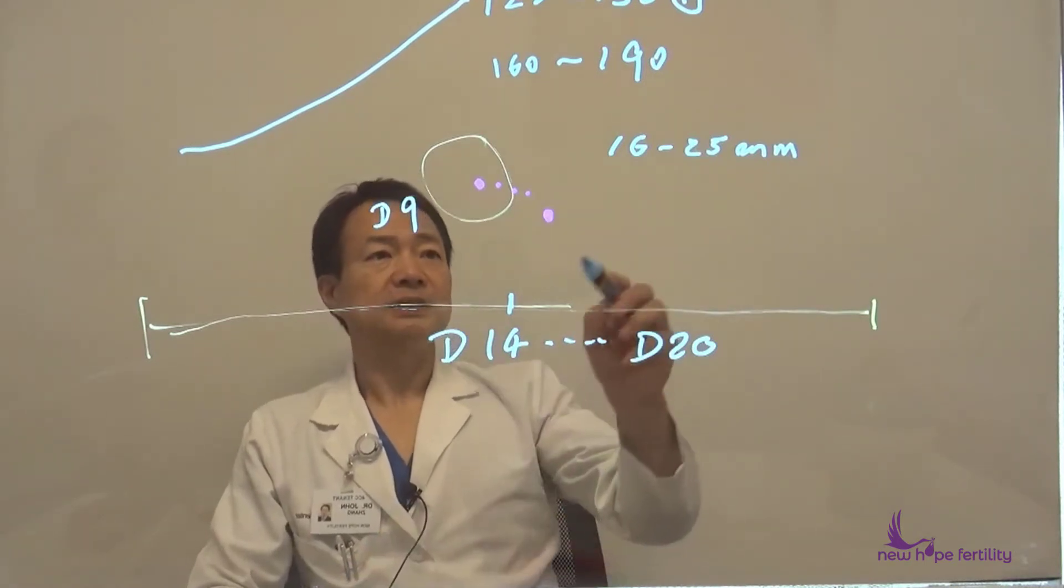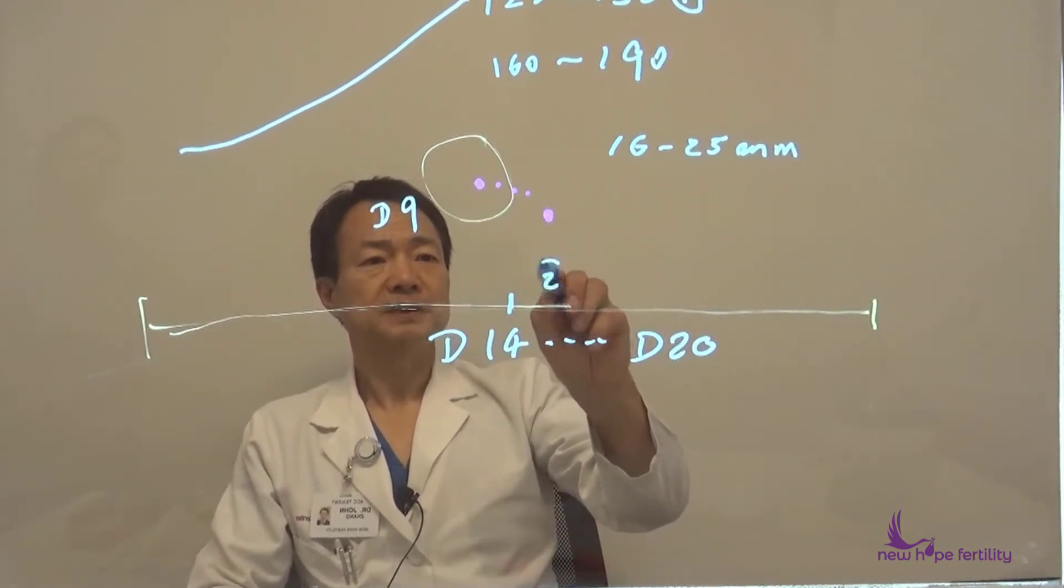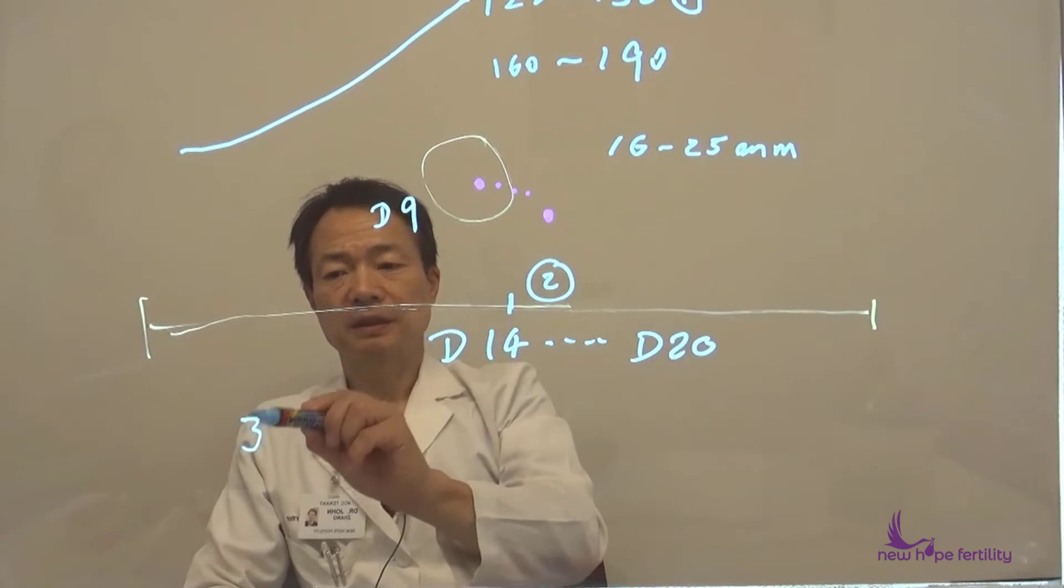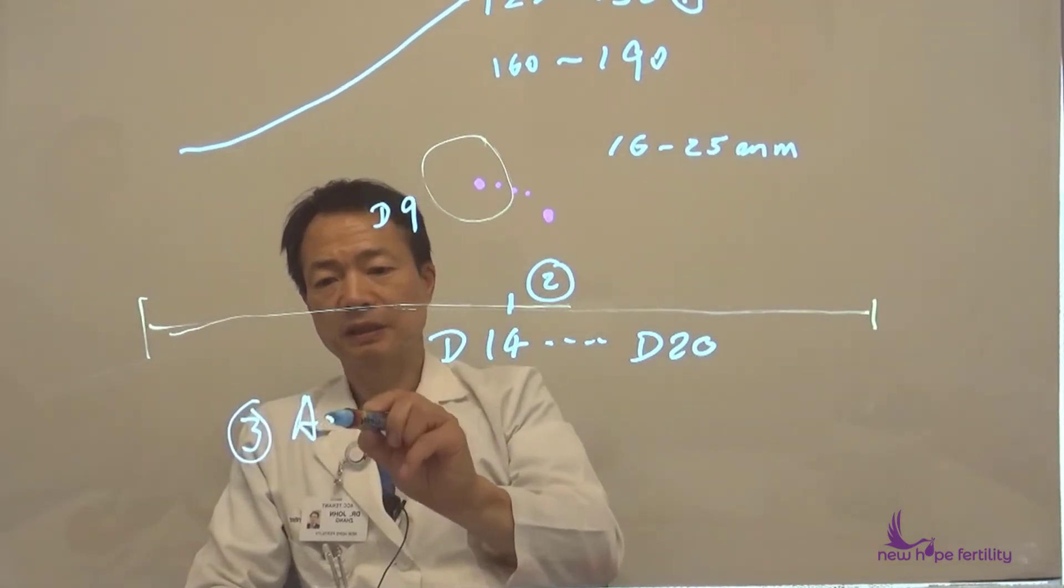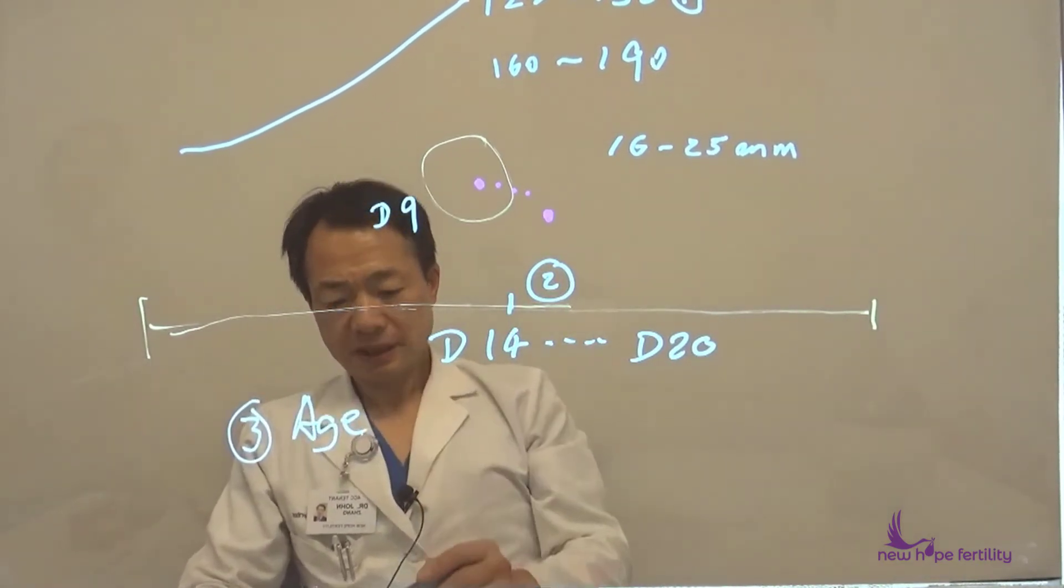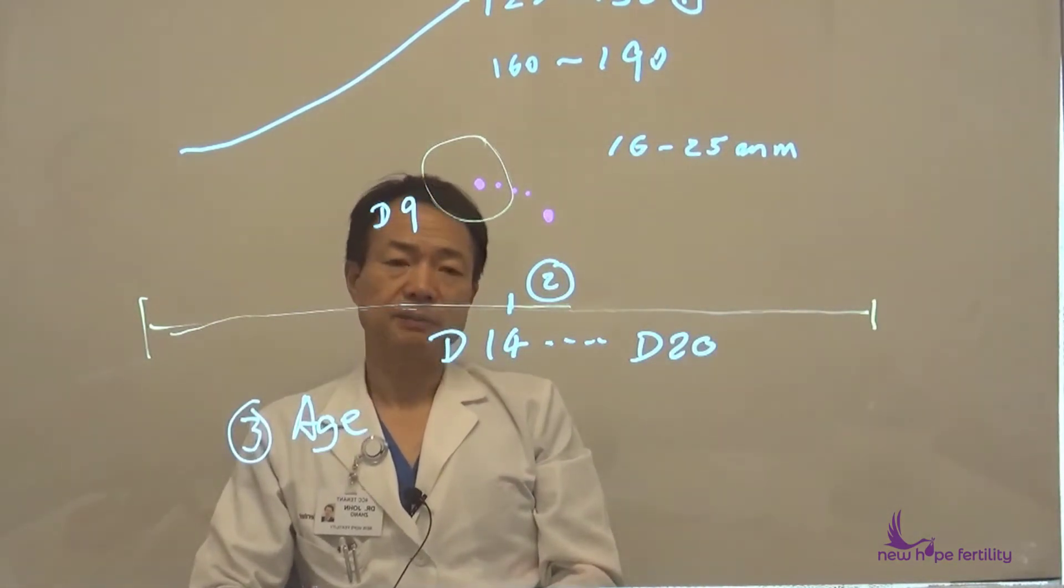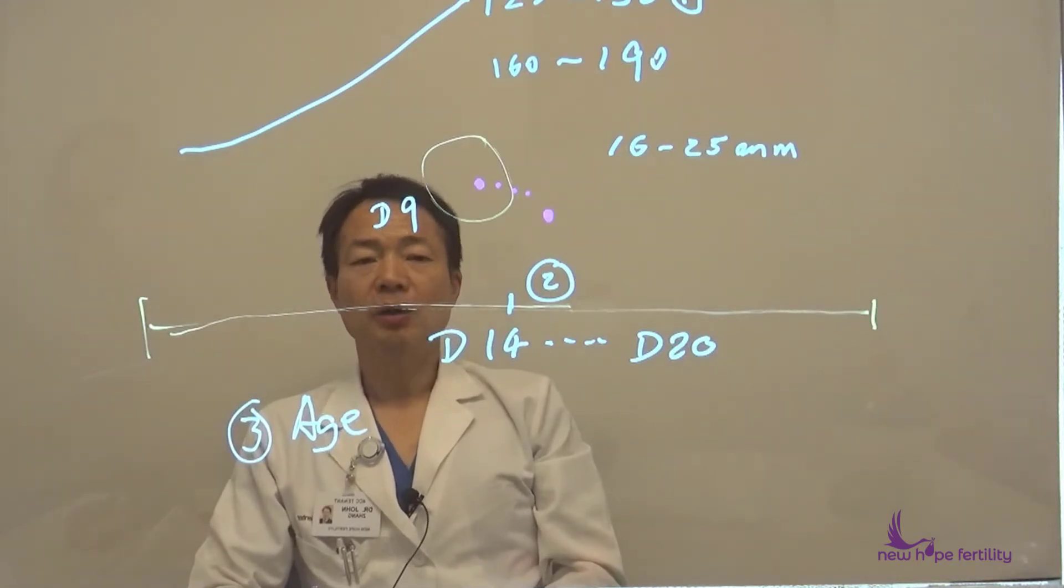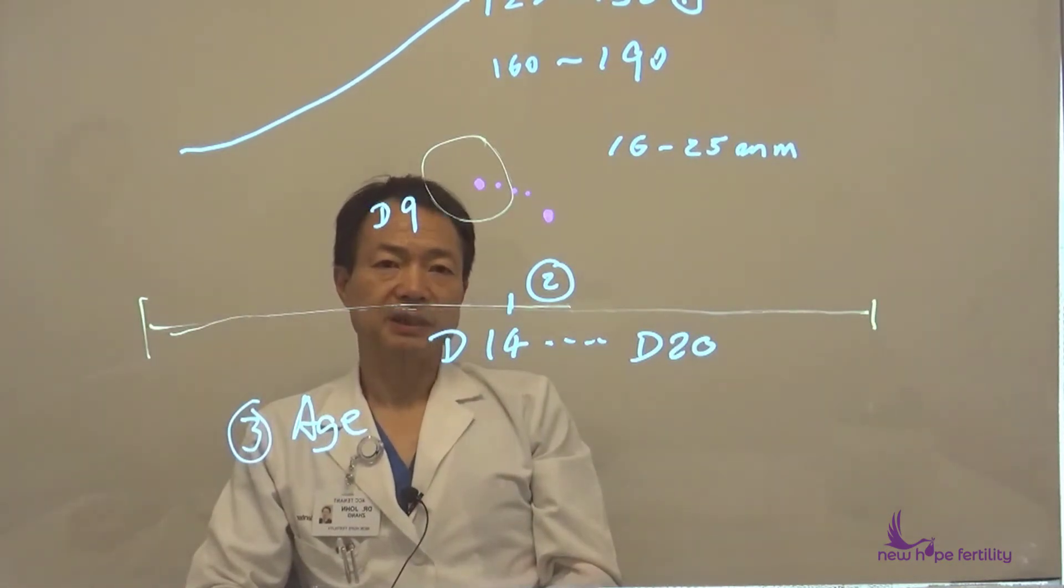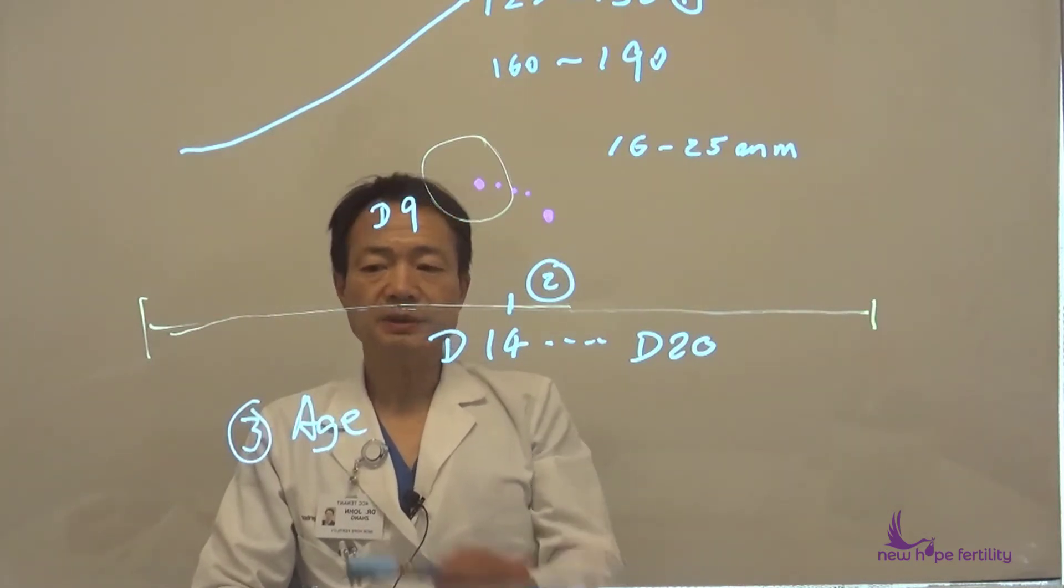And number three is age. We always hear that a lady will say, 'My period was very long or even irregular, but since I reached 42 to 45 my period is getting regular or even getting shorter.' So age is very important. Ladies tend to ovulate earlier in more advanced maternal ages, say more than 30 years old.